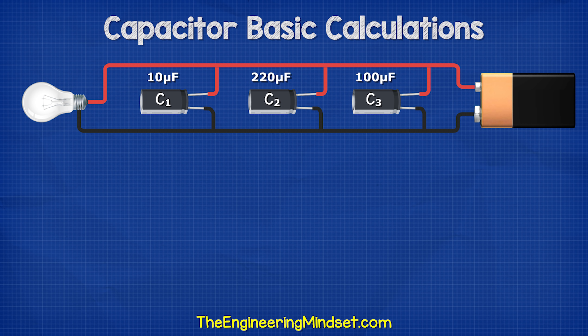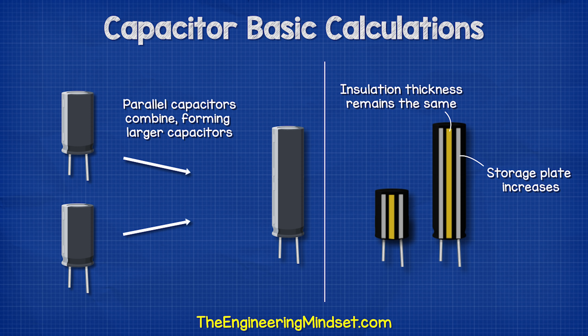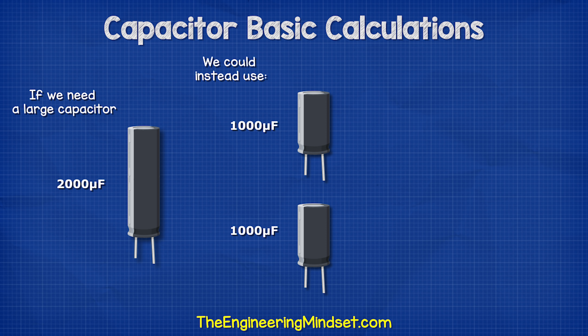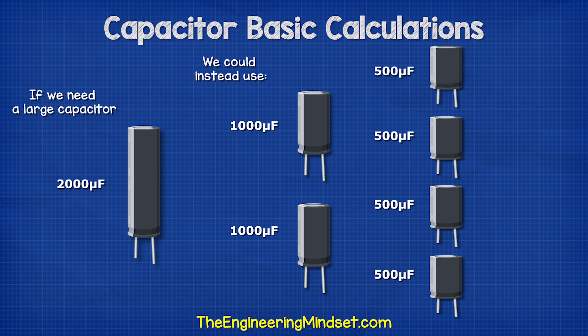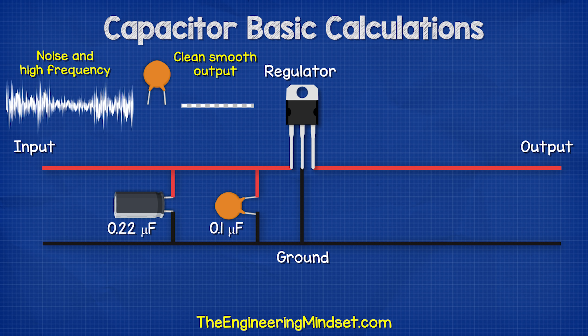We can keep adding more, such as a 100 microfarad capacitor, and the total is just the sum of all of the capacitors. By placing them in parallel, we are essentially combining these to form a larger capacitor. That's very useful because if we needed a large 2,000 microfarad capacitor but didn't have one, we could use more smaller capacitors, such as 2 × 1,000 microfarads or 4 × 500 microfarads. It's also often used for filtering out noise and to provide more current in high demand circuits.